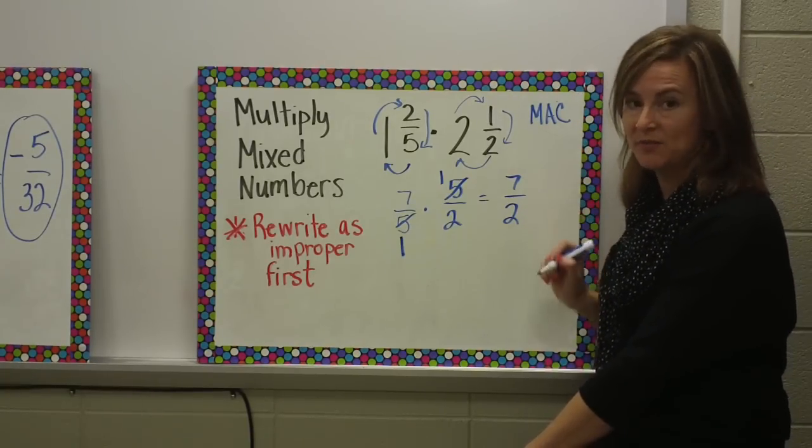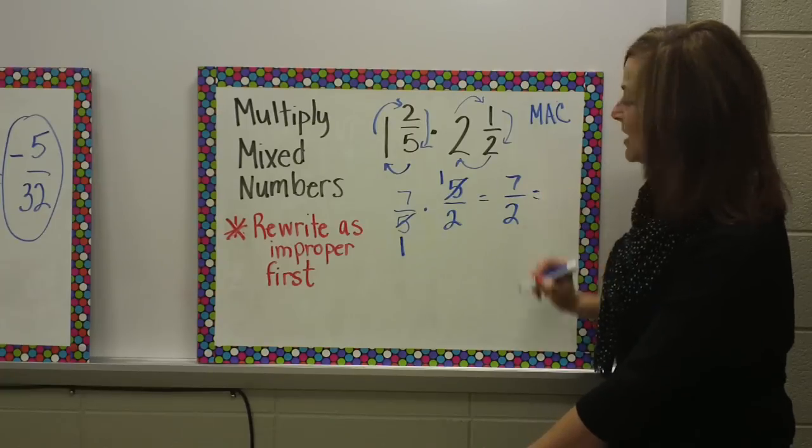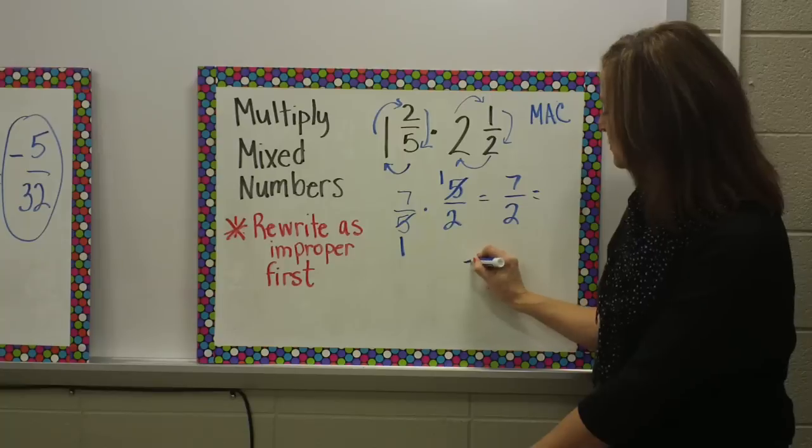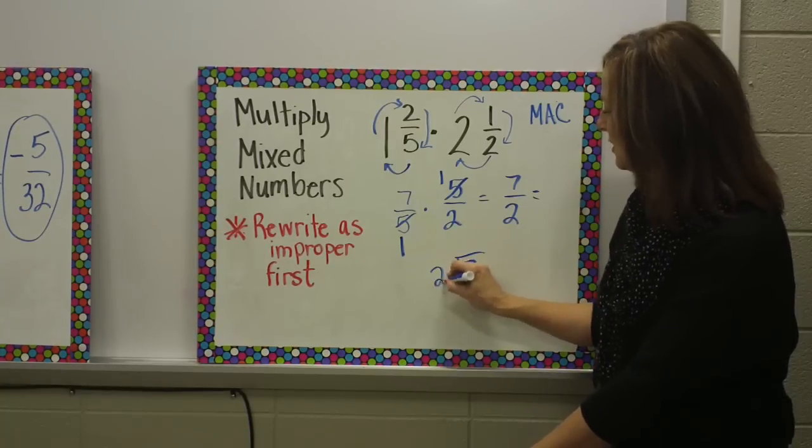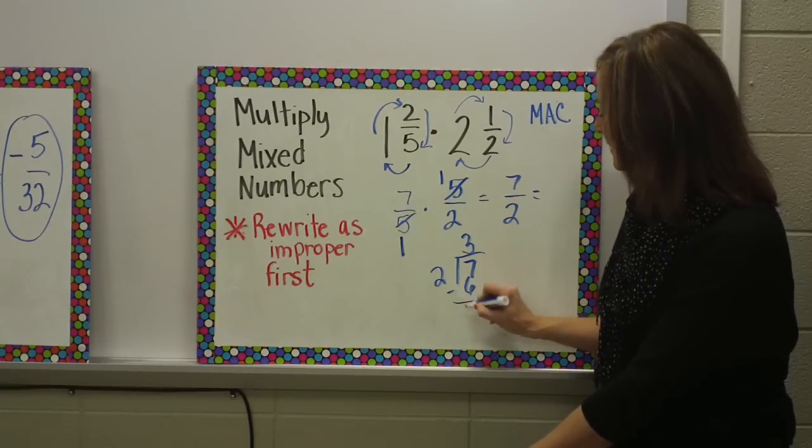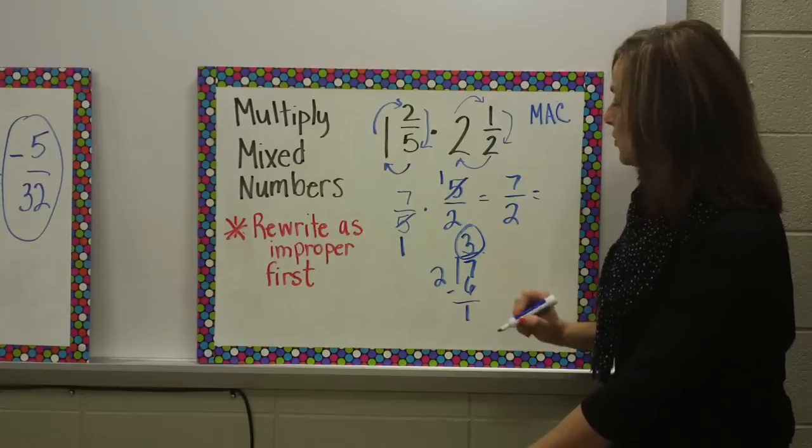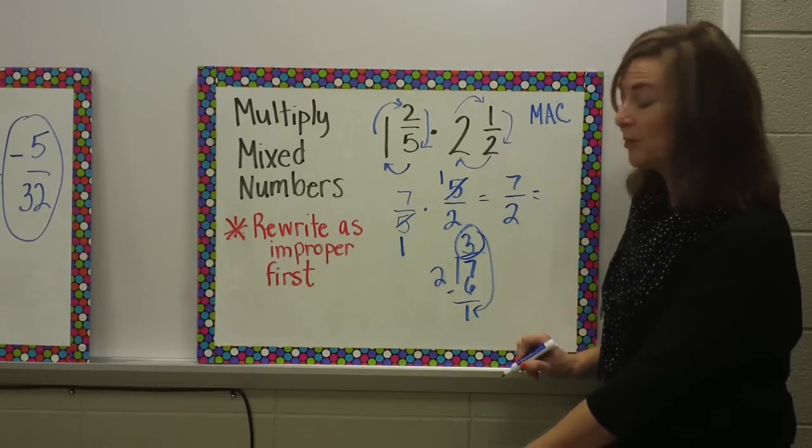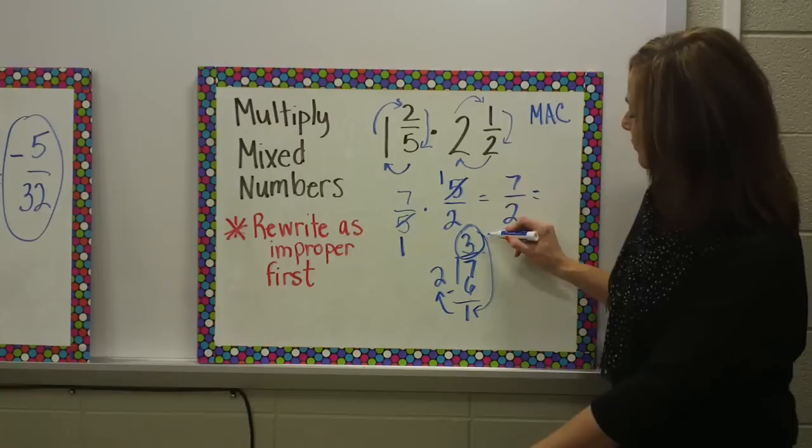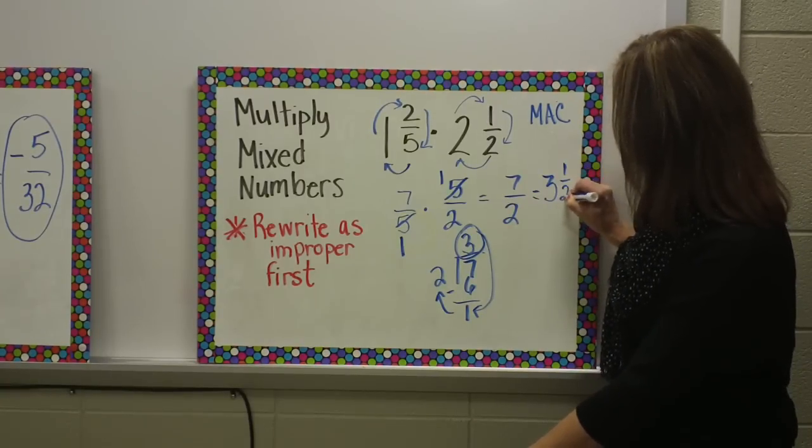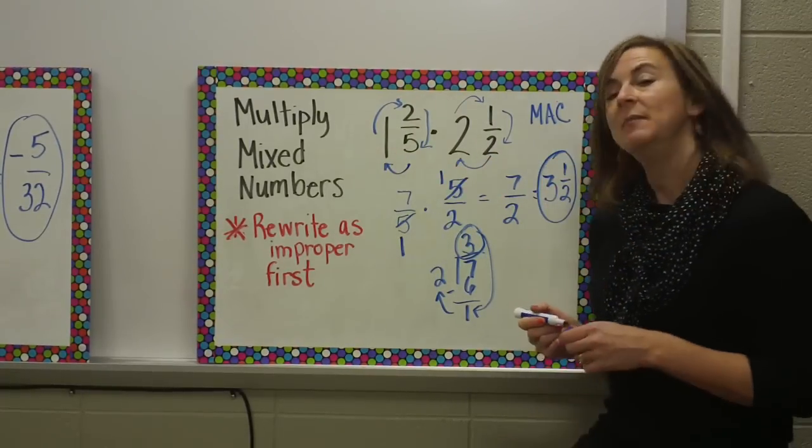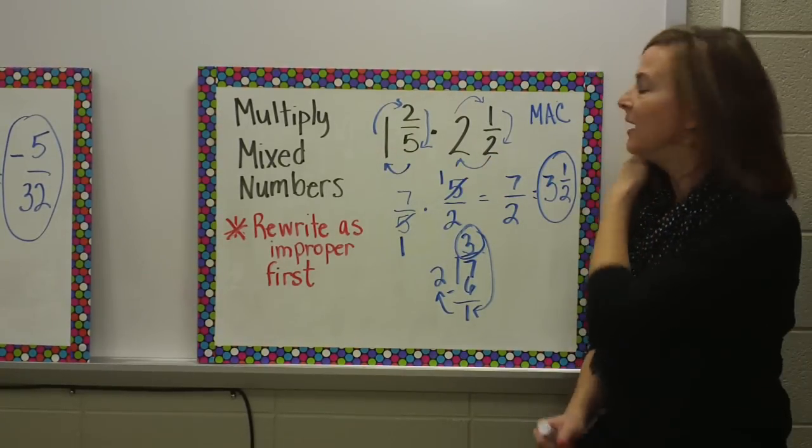My last step is to make sure that this is in simplest form, including if I have an improper fraction. If I have an improper fraction, I want to rewrite that. It would be seven divided by two, and I can get three twos out of seven, three times two is six, and I'm left with one. My whole number is three, my numerator is one, and my denominator stays the same. Three and one half. Both of these are positive, so my product will be positive, and my answer is three and one half.